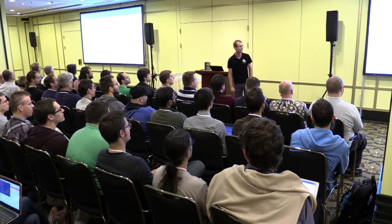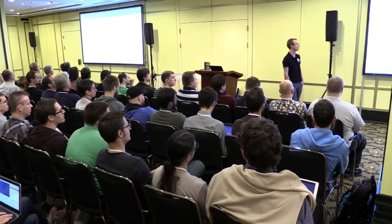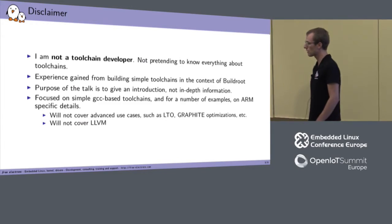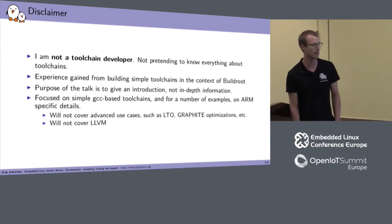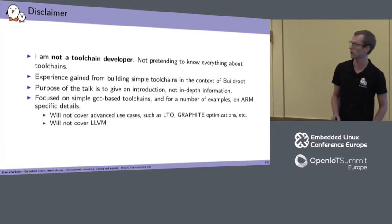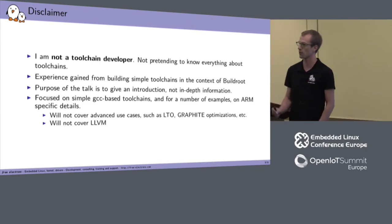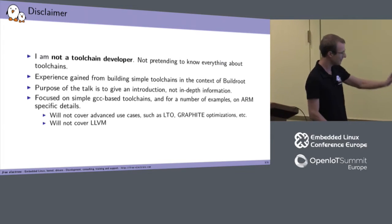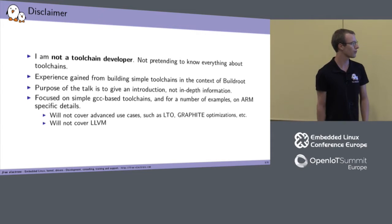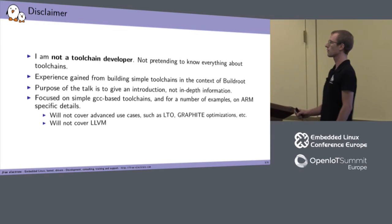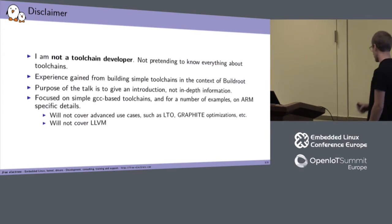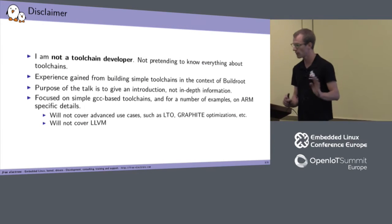To give you a chance to leave the room in case you're not interested, I want to make sure we're on the same page about what this talk is going to be about. I'm not a toolchain developer. I work on a build system, so I do have some knowledge about cross compilation issues, but I'm definitely not a GCC, Binutils, or C library developer. This is really an introduction-type talk, not an in-depth one. We're going to focus on simple GCC-based toolchains — not LLVM, not advanced use cases like link time optimization or graphic optimizations.